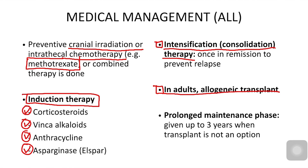Students asked about allogenic transplant. An allogenic transplant uses stem cells from a healthy donor's bloodstream to replace the diseased or damaged bone marrow. It targets the bone marrow directly. For prolonged maintenance phase treatment, therapy goes up to three years when transplant is not an option.